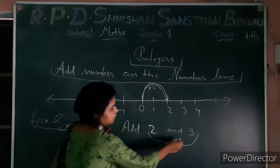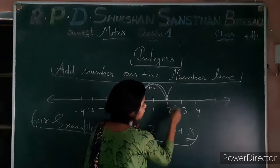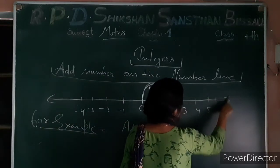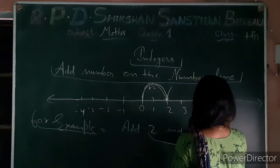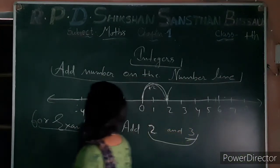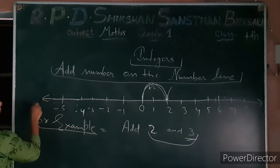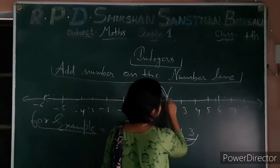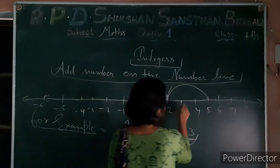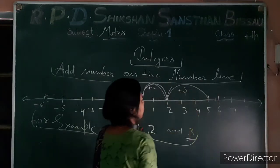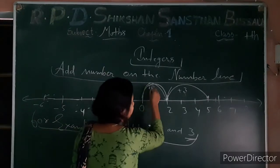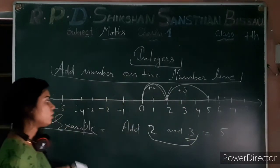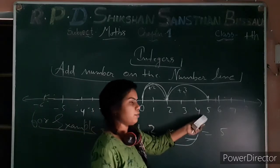Now the second number is 3. From position 2, we count 1, 2, 3 more steps to the right. So plus 2 plus 3 equals plus 5. The addition on the number line gives us plus 5.